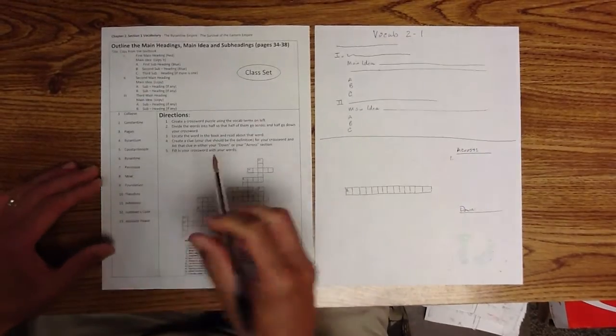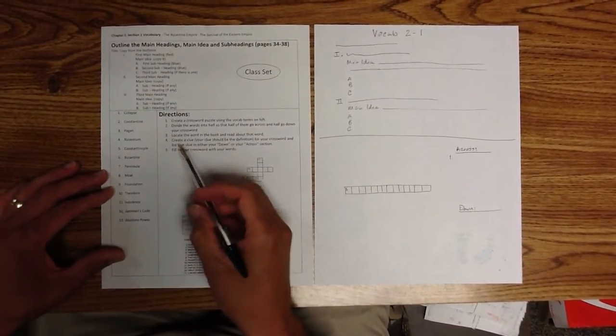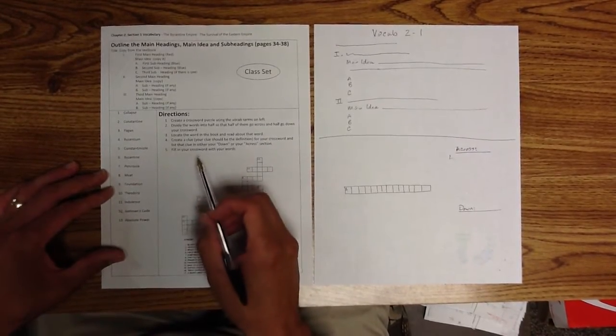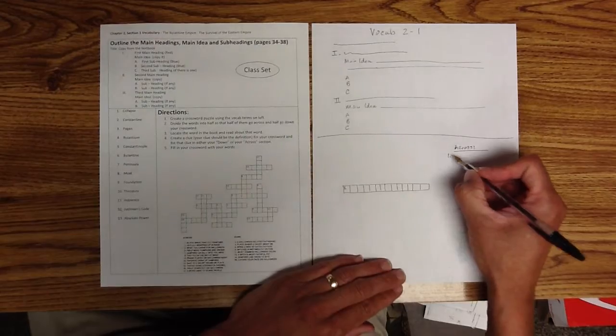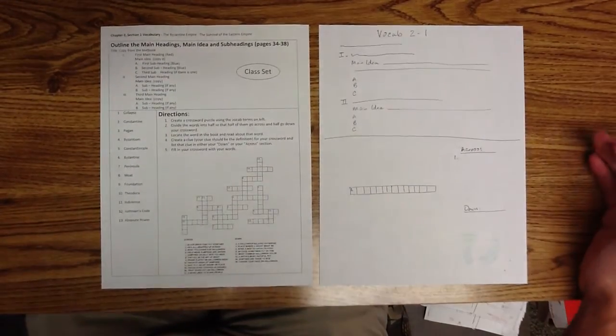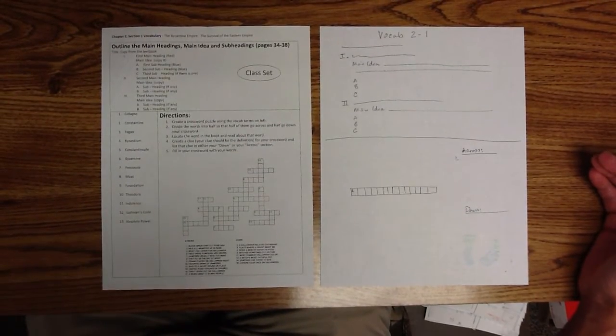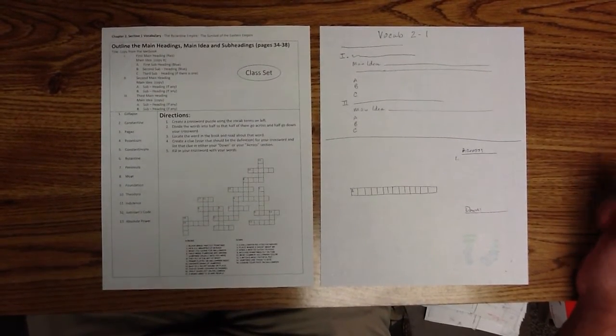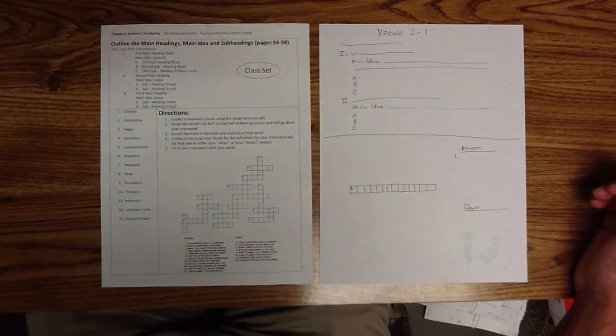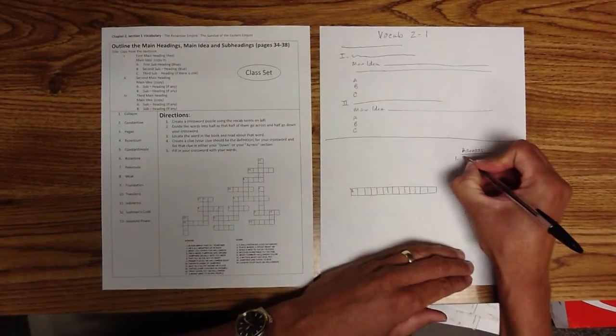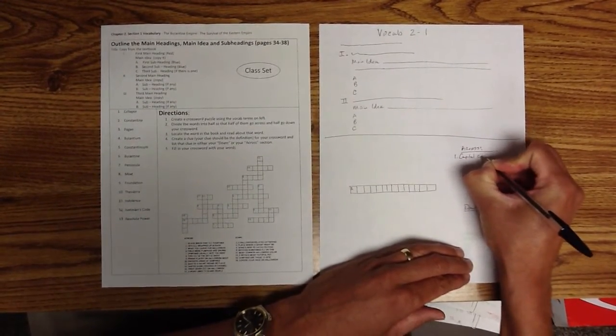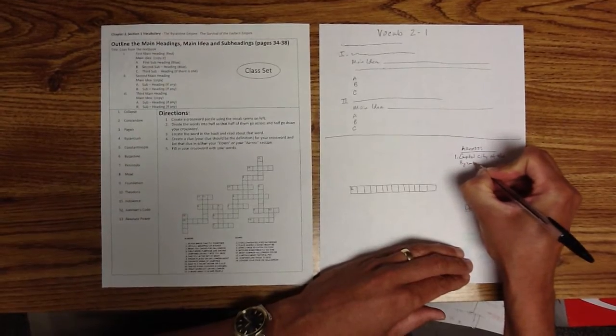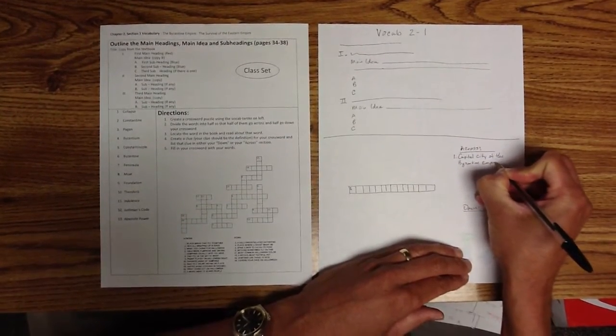So it says, locate the word in the book and read about that word. Create a clue. Your clue should be the definition for your crossword. And list that clue in either the down or across. So fill in your crossword with your word. So I've got number 1, Constantinople. I know this was the capital city of the Byzantine Empire. There's many things I know about Constantinople. It was named after, the city named after Constantine. So there's all kinds of clues that I can come up with for it. But I'll probably say, capital city of the Byzantine Empire.